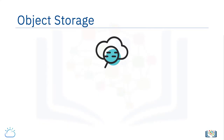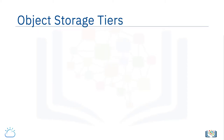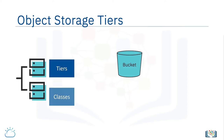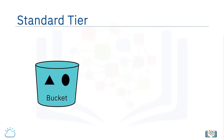In this video we're going to look more closely at object storage data tiers and object storage APIs. Object storage buckets also have storage tiers or classes associated with them, and these tiers are based on how frequently the data is accessed. A standard tier bucket is where you would store objects that are frequently accessed, and this tier tends to have the highest per gigabyte cost associated with it.